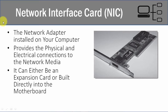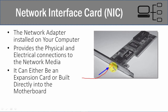The network interface card is what's installed on your computer. It's either built into the motherboard or it's going to be an expansion card like this one right here, where it plugs into the motherboard. Its main role is to plug network cables into the ports, allowing you to communicate on the network. Electrical signals go in and out of this port — that's our data going out onto the network and the data that comes back to us.